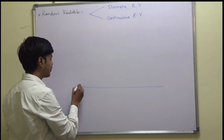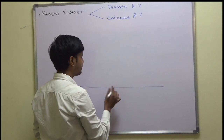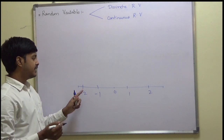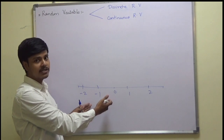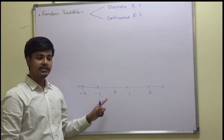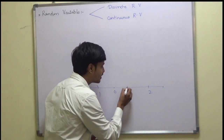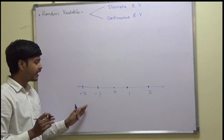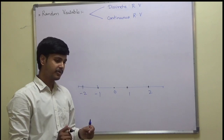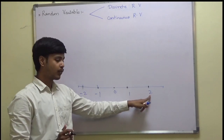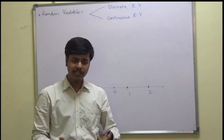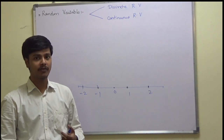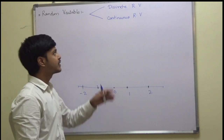For a random experiment, suppose your random variable takes values like 0, 1, 2, minus 1, minus 2 — for example. When the random variable is assigned discrete values like these, it is called a discrete random variable. In other words, if the random variable takes a finite number of values or a countably infinite number of values, then it is a discrete random variable.